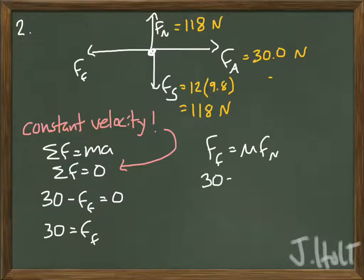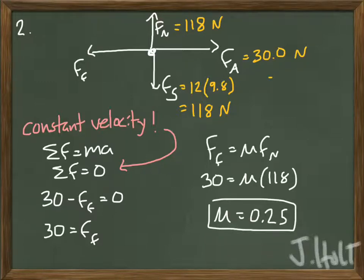Let's take a look at our formula for the force of friction, mu times the normal force. Well, we know what the normal force is, so we can divide both sides by the normal force in order to solve for mu. When you get your answer for mu, make sure it's a value between 0 and 1. It does not have units.